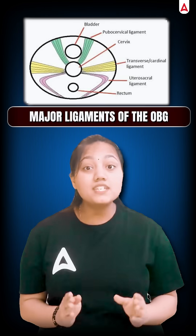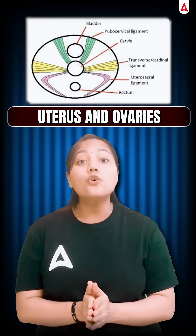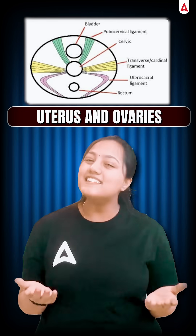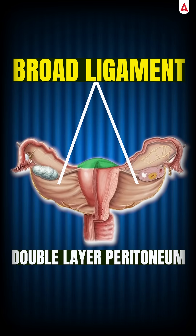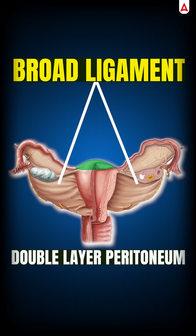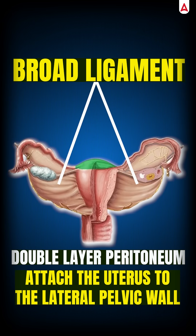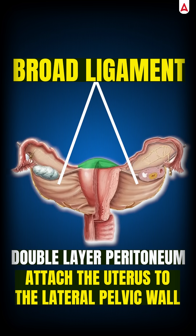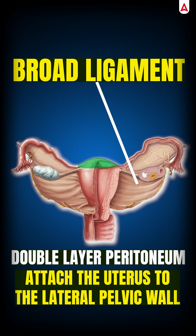Today we will do a quick but important revision of OBG's major ligaments which support the uterus and ovaries. First is the Broad Ligament. It is a double layer of peritoneum which is attached to the uterus from the lateral pelvic wall. It does provide structural support to the uterus.